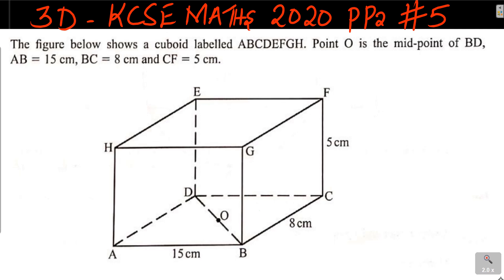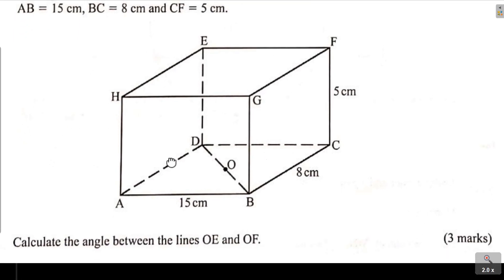Hello viewers and welcome to the lesson 3-dimensional geometry, KCC Mathematics 2020, paper 2, question number 5. The question reads: the figure below shows a cuboid labeled ABCDEFGH. Point O is the midpoint of BD. AB equals 15 cm, BC equals 8 cm, CF equals 5 cm. The diagram is here — you can see all the points.